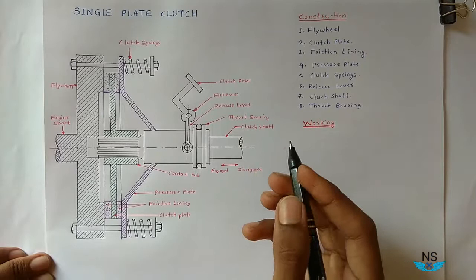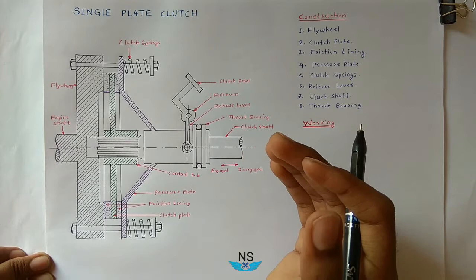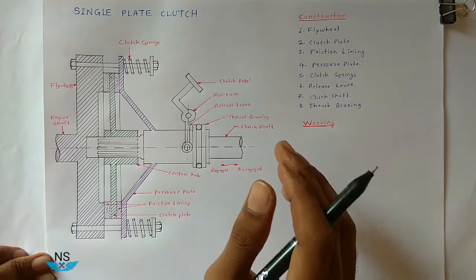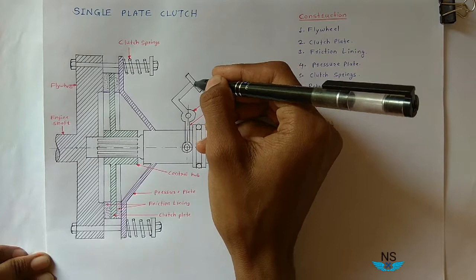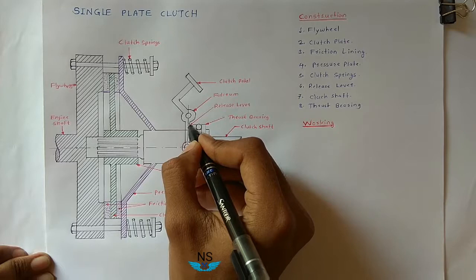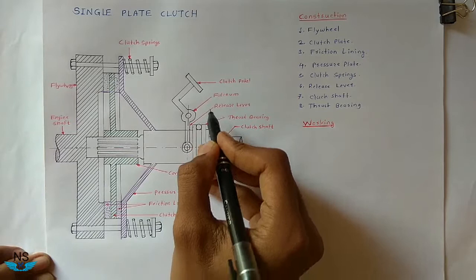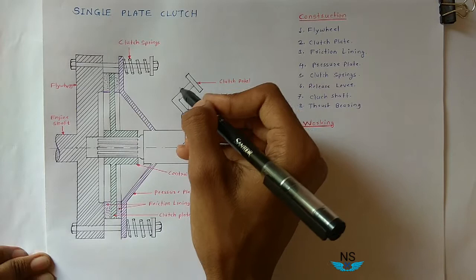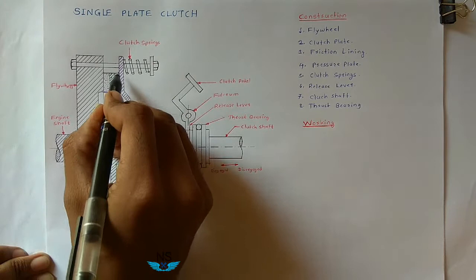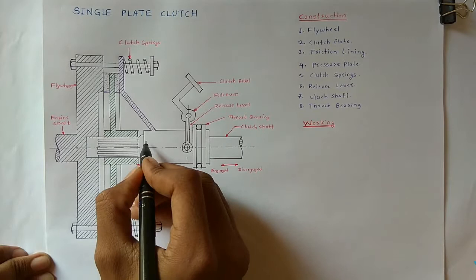When the driver needs to shift gear or stop the vehicle, the driver presses the clutch pedal. When the driver presses the clutch pedal, the release lever pulls the pressure plate away from the clutch plate, so that the clutch plate loses contact with the flywheel and becomes disengaged.